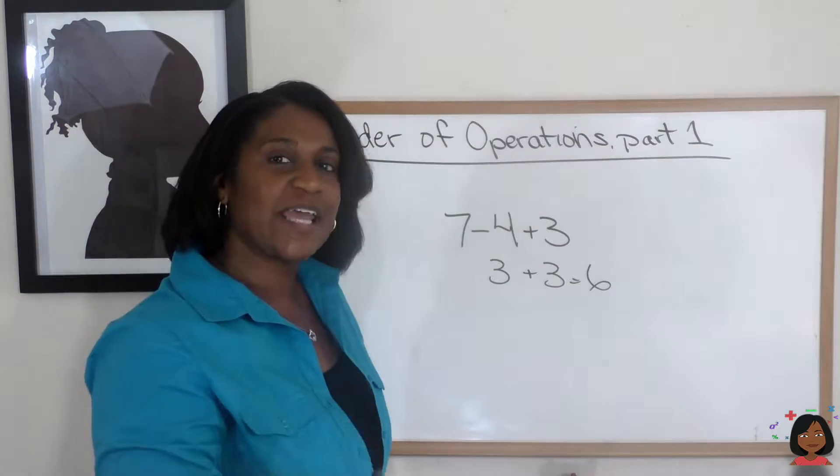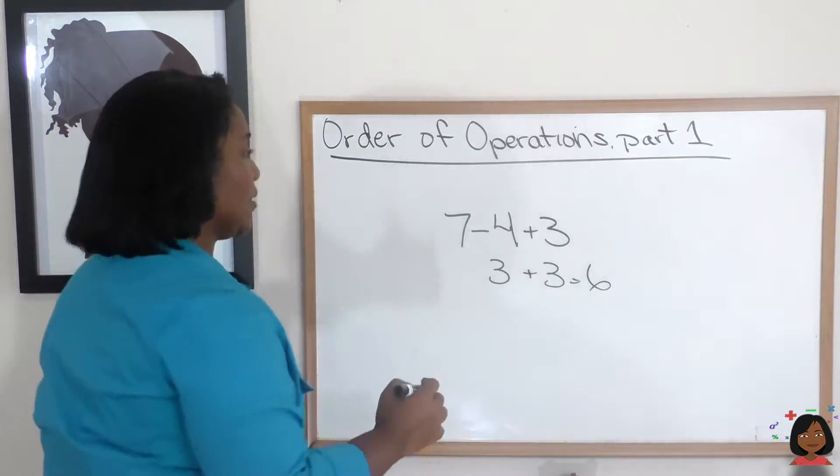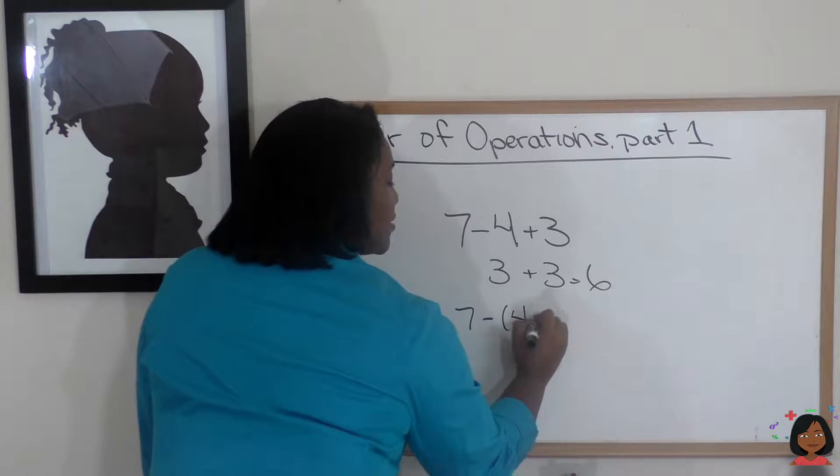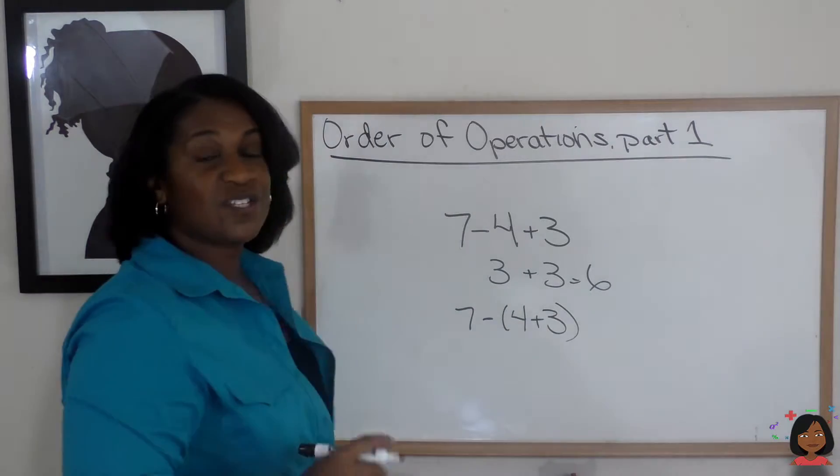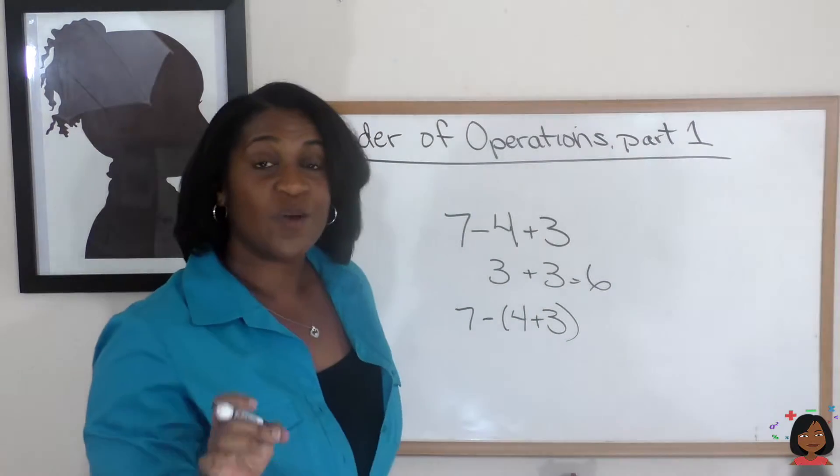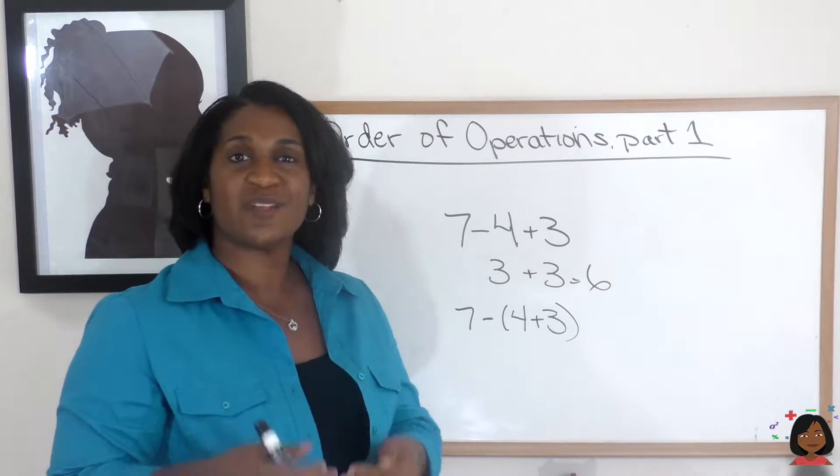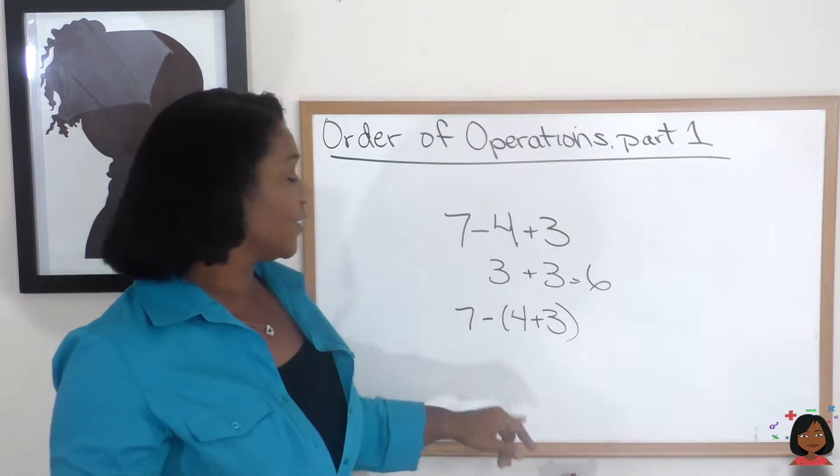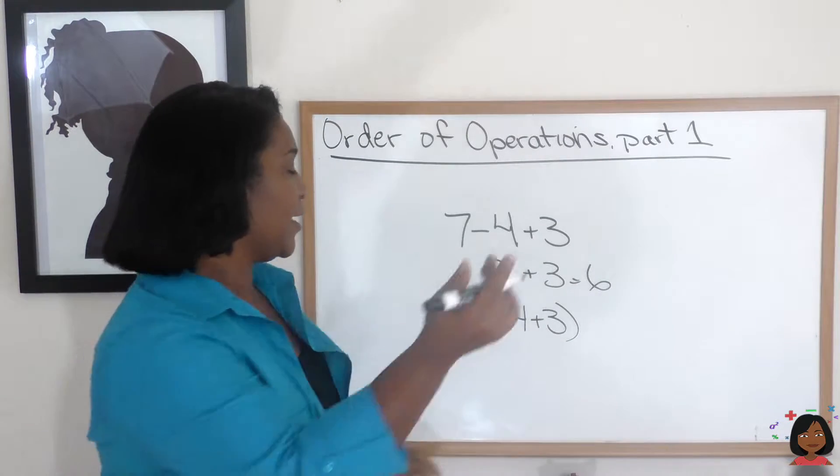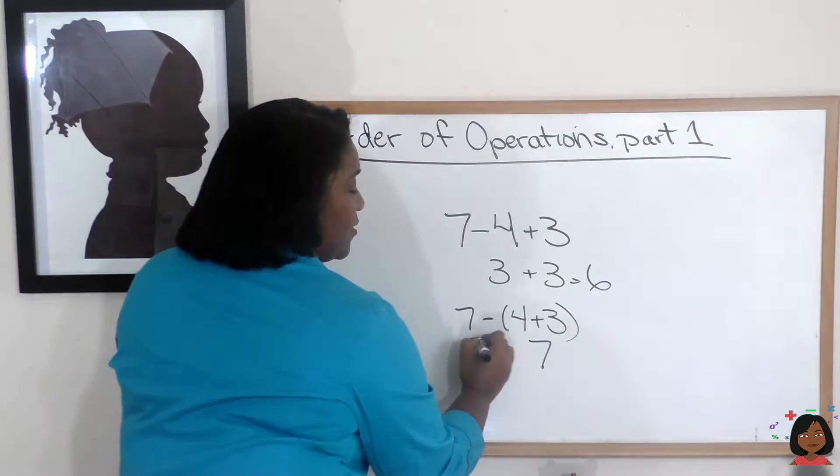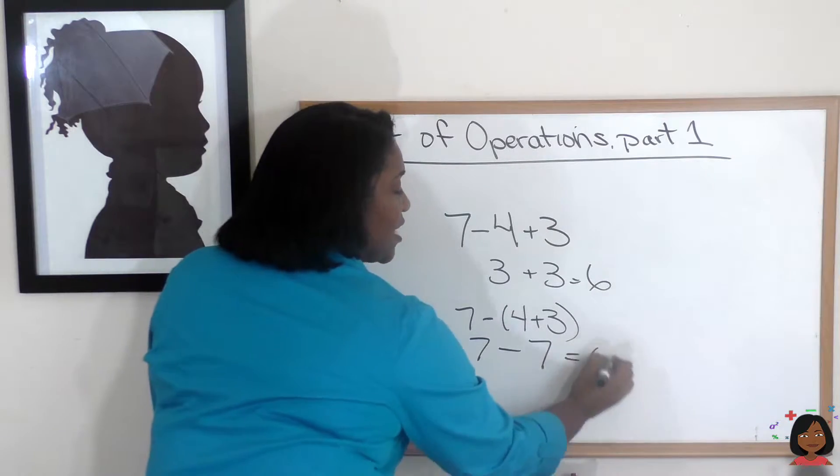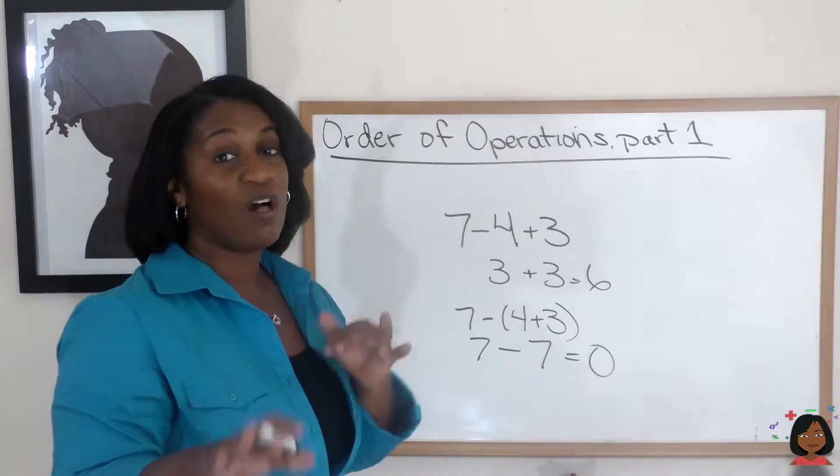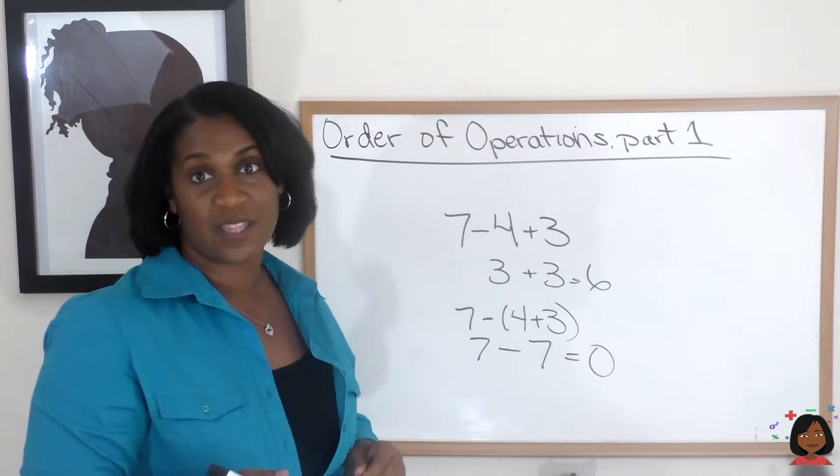All right, but let's take the same problem. We're going to add something to it. Let's say we did 7 minus parentheses 4 plus 3. So whenever we have parentheses, here's the rule, we do what's in the parentheses first. Parentheses are telling us to do what's inside of it first. So let's do it. 4 plus 3 is 7. And then we have 7 minus 7 equals 0. Same numbers, different answer. And that's all due to the parentheses in the order of which we did the operations.